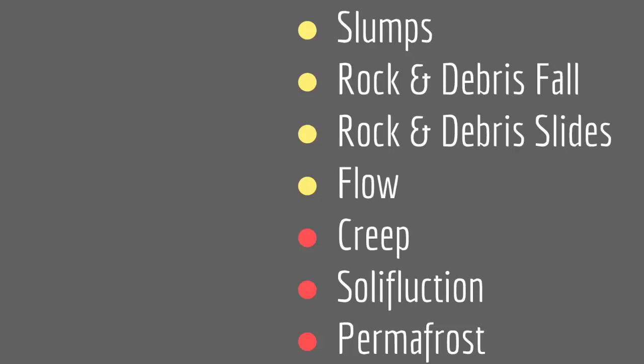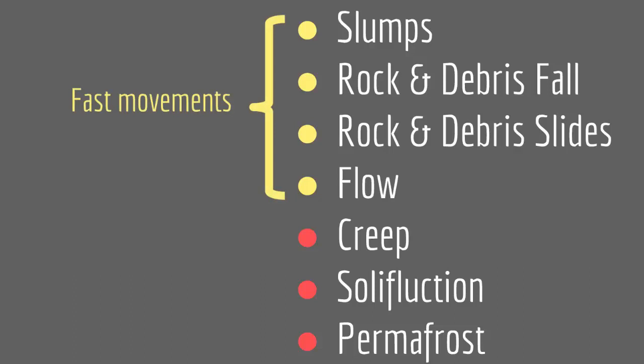I have divided these based on their rate of movement — how fast they are. Slumps, rock and debris falls, rock and debris slides, and flow are fast movements. They happen very, very quickly.